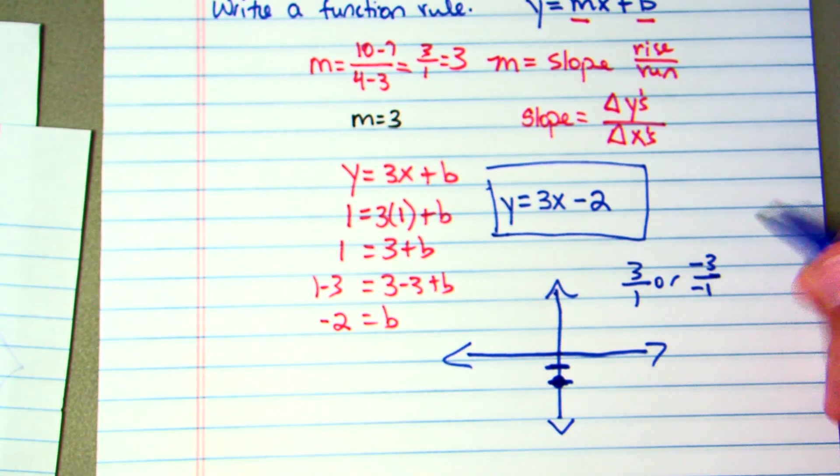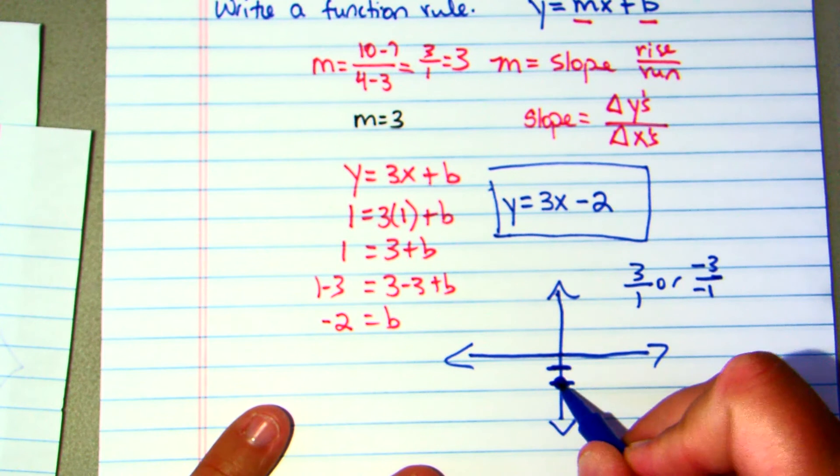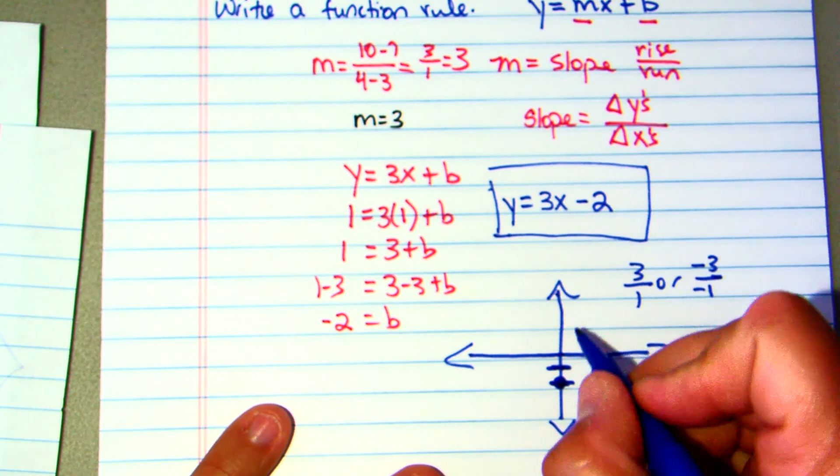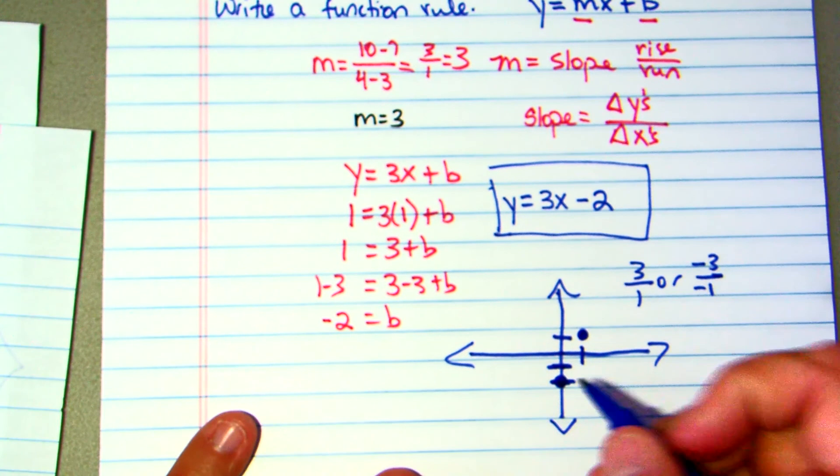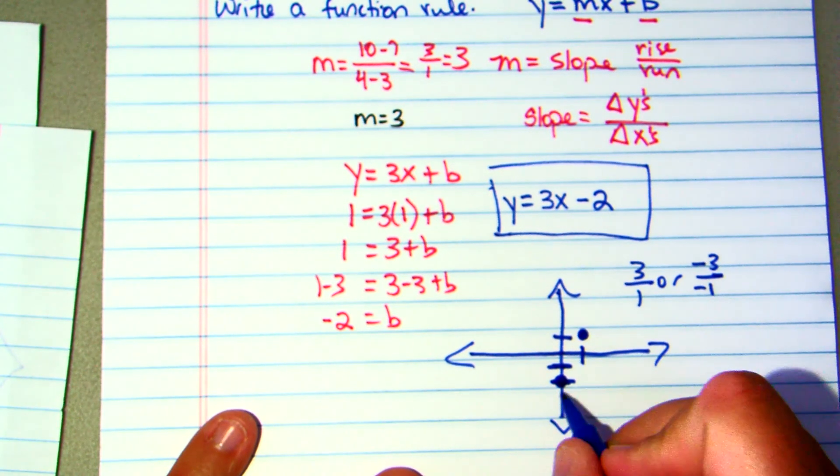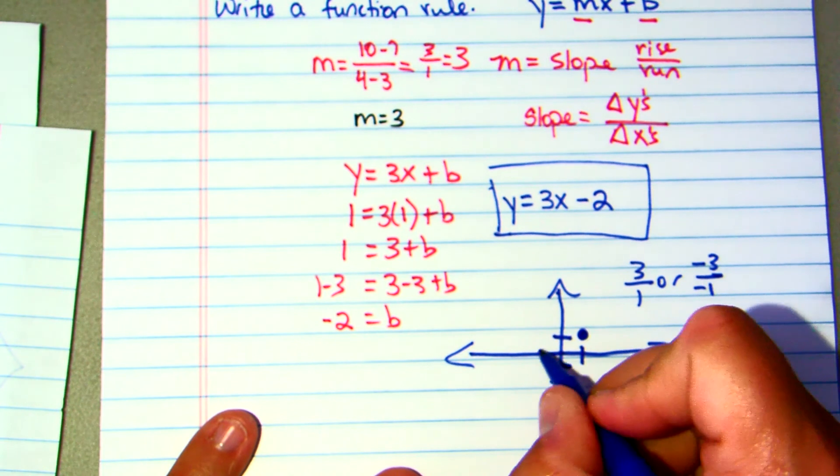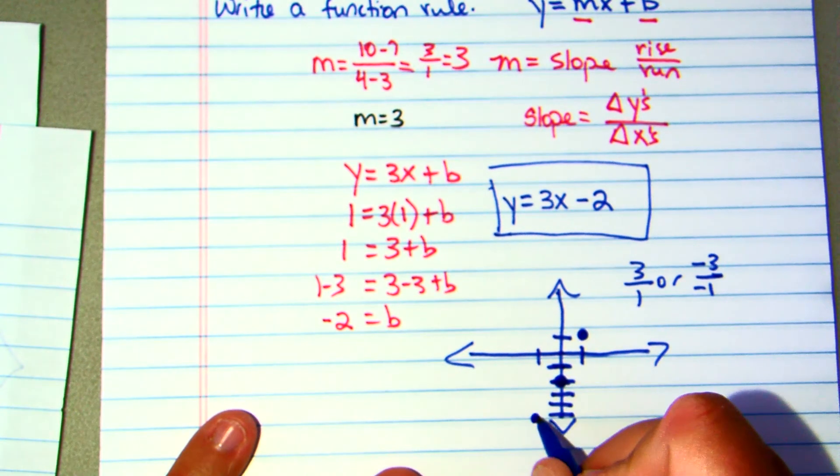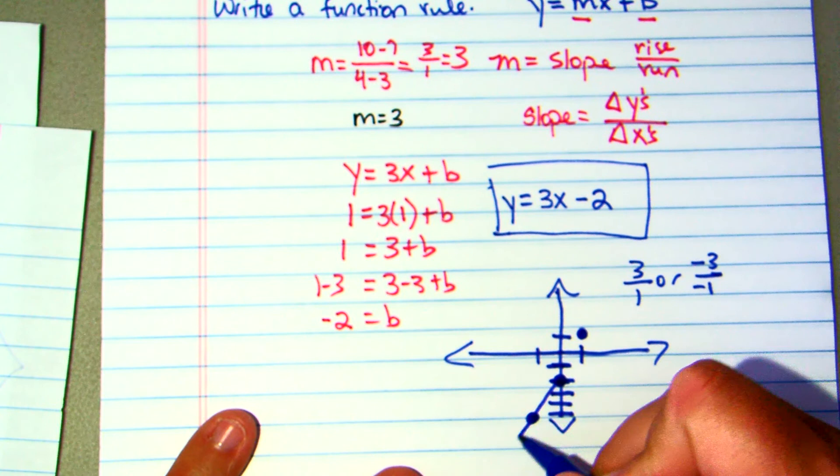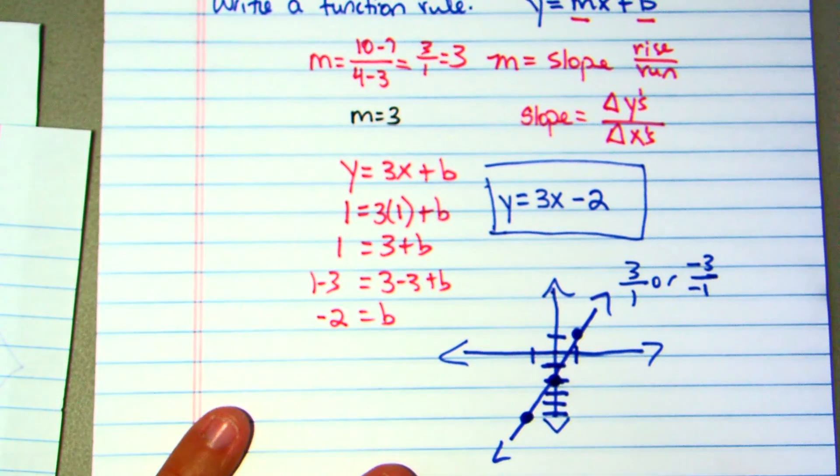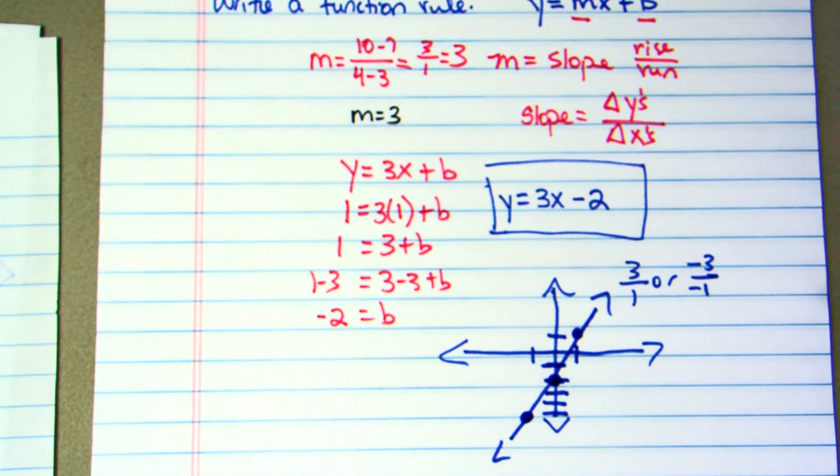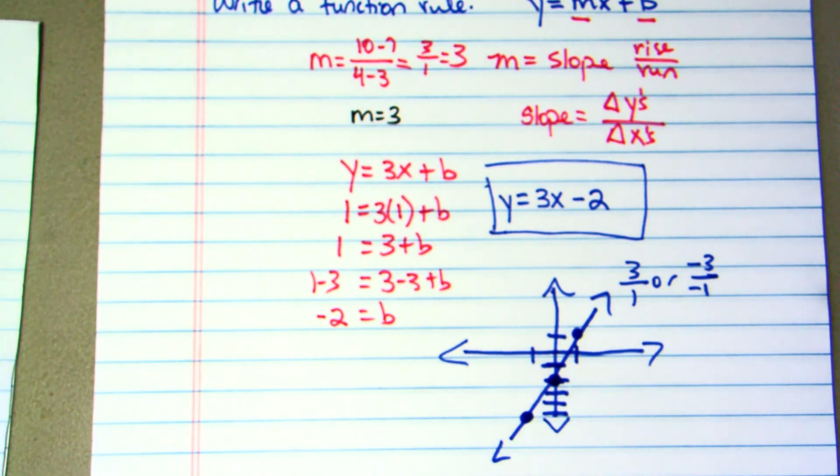Our 3 over 1, that's my rise over my run. So I'm going to rise from this point three places. So I'll go 1, 2, and 3 and to the right one place. And there's that point. Now negative 3 over negative 1. I'm going to go down 1, 2, 3 places and to the left. And it will be right here. Then I'm going to connect those dots. And there is that line that is graphed in the equation Y equals 3X minus 2. It's how we write a function rule. Also how we write, how we graph an equation.